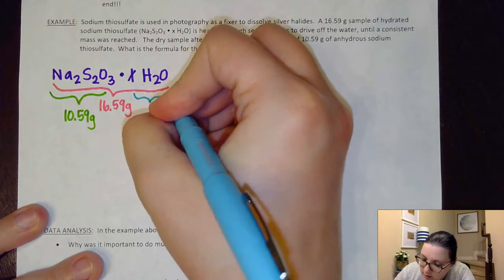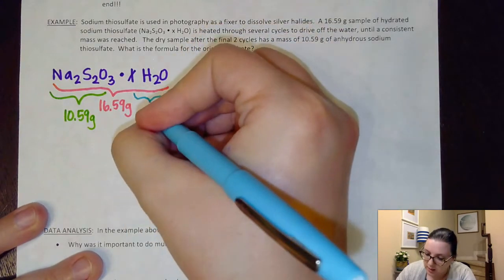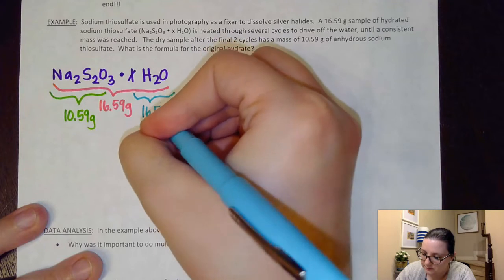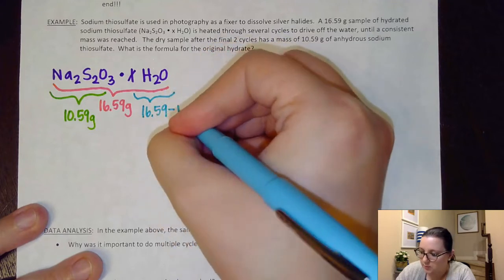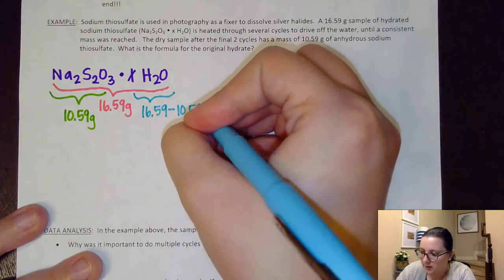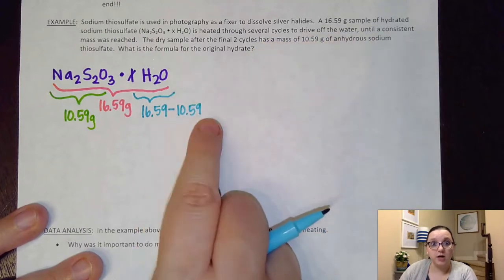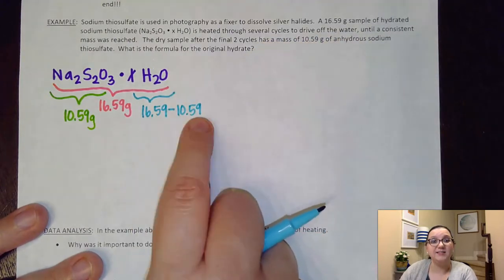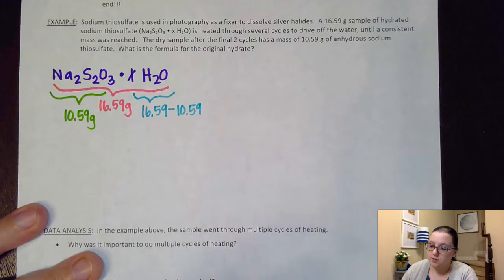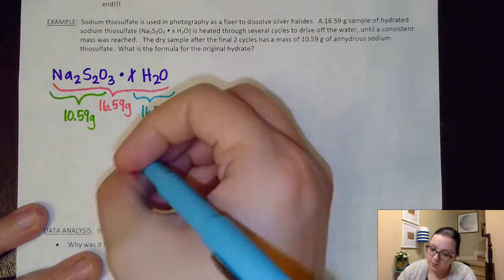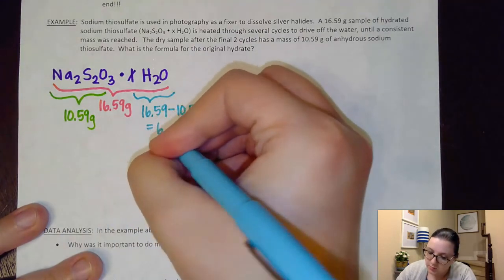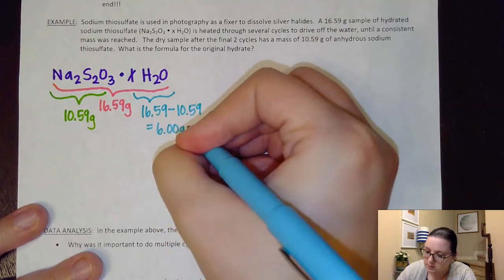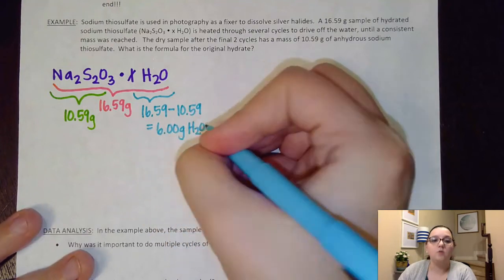So again, to get the water, and you want to always show your work here, so I'm going to show that, hey, to get that value I would take the 16.59, subtract off the 10.59. And since I'm doing a subtraction, I would want to address places past the decimal here. So both of those had two places past the decimal, so that means I would want to show 6.00 grams of water that I had.